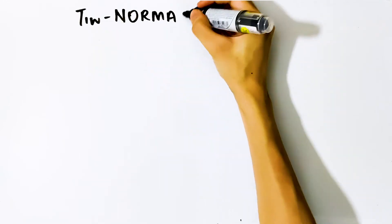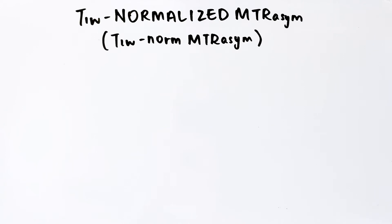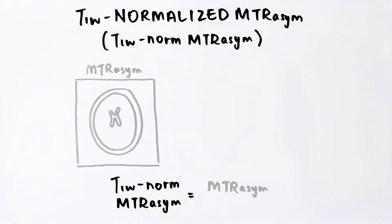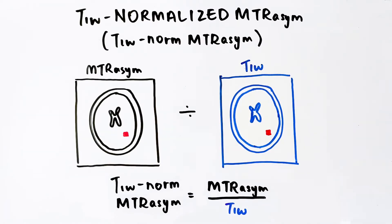To address this, several compensated or corrected model-free methods have been proposed. Firstly is the T1W normalized MTR asymmetry. T1W here refers to the water longitudinal relaxation time. This method is done by first calculating MTR asymmetry, then the quantified MTR asymmetry is normalized by T1W on a voxel-by-voxel basis.